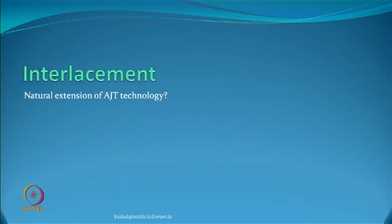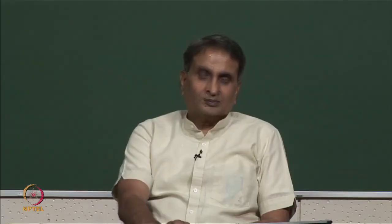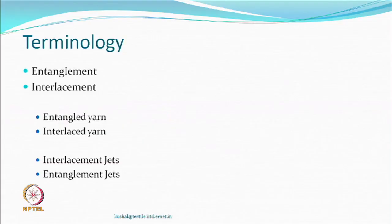Interlacement is another process which can in some sense be considered an offshoot of air jet texturing. The terms 'entanglement' and 'interlacement' mean the same thing — the filaments have entangled or interlaced. Yarns subjected to this process are called entangled or interlaced yarns, and the jets used are called interlacement jets or entanglement jets.